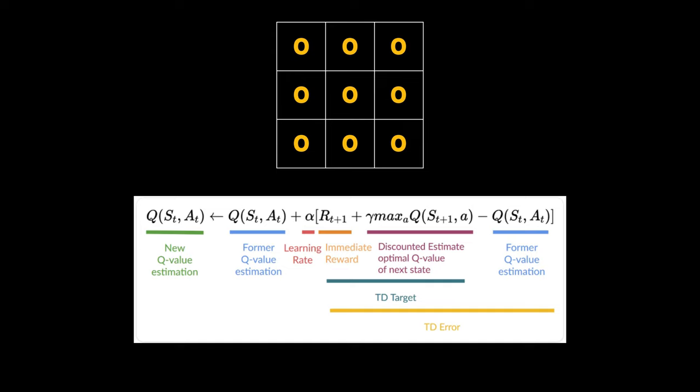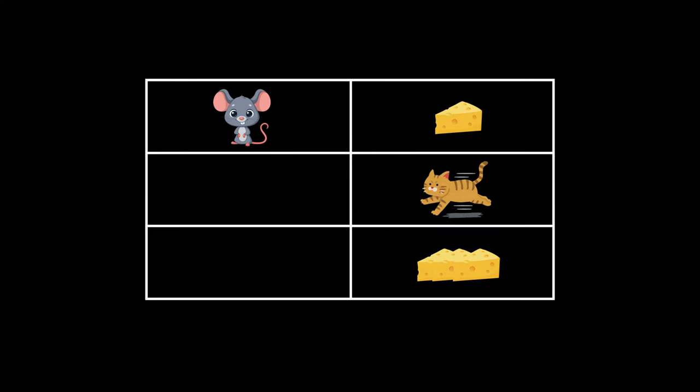Well, if this looks daunting, don't worry, we are jumping straight into an example. So here we have our 3 by 2 grid world. Our mouse Jerry always starts at the state (0,0).